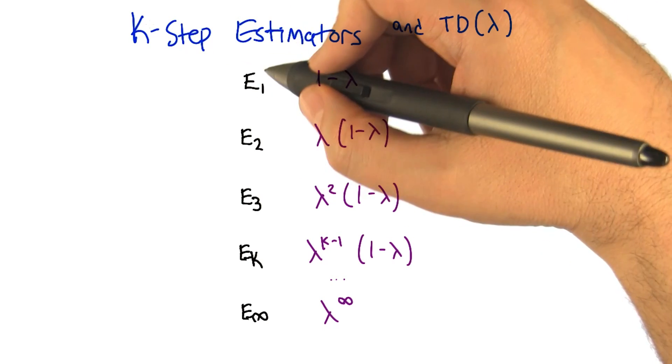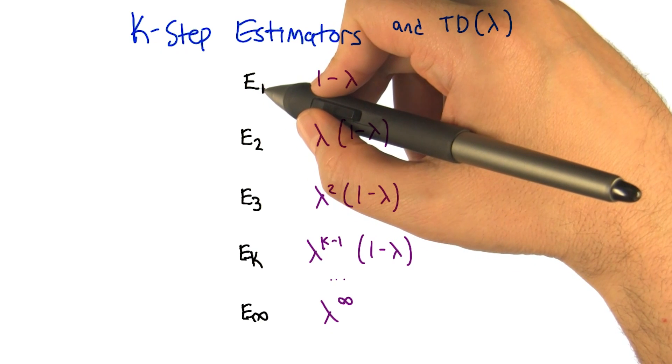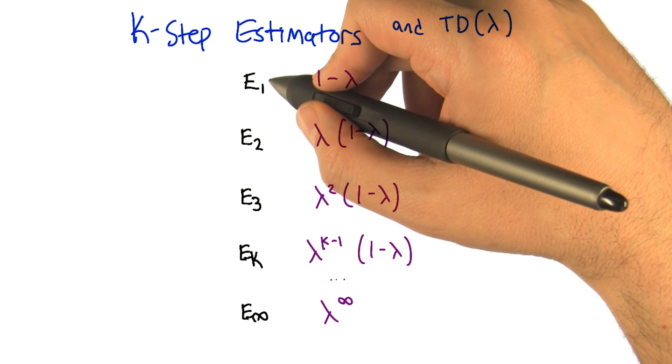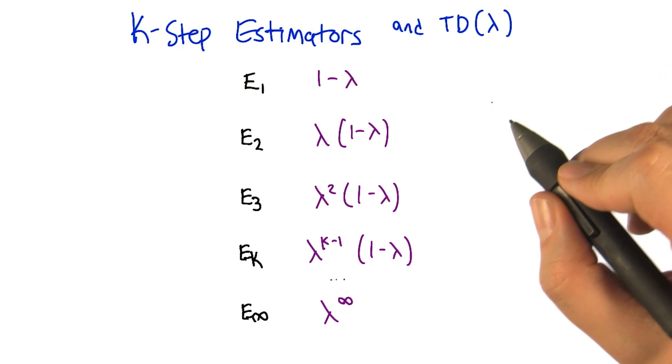So here's how we relate the k step estimators that we just talked about with TD lambda. The idea is we're actually going to be using a weighted combination of all of the estimators for any one of these TD lambda algorithms.